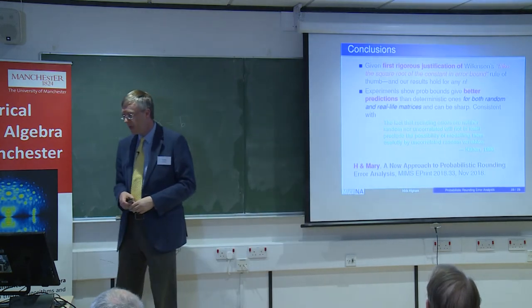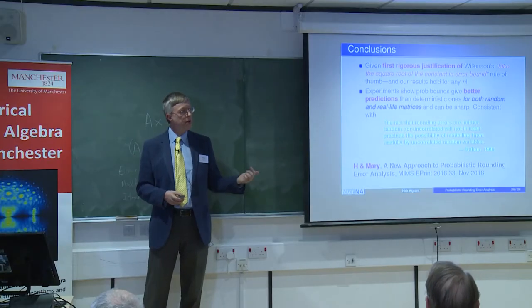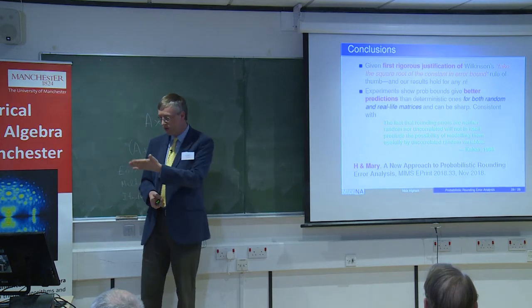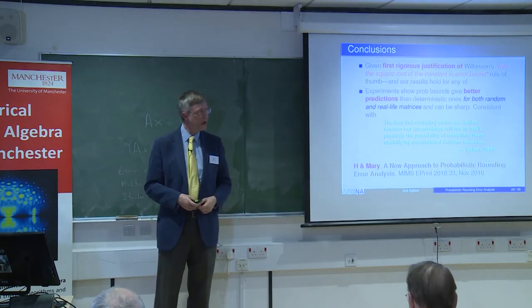I really haven't got time to go into this slide. I will just say we do have examples where the model fails. One example is when you have inner product of two large non-negative vectors. So we can certainly identify cases where the model is not valid and the probabilistic bound is actually less than the thing it's supposed to be bounding eventually. So to finish off, this is now a rigorous justification I think of Wilkinson's rule of thumb. The key idea was not to use the central limit theorem but to use a concentration inequality. The bottom line is that these probabilistic bounds are substantially smaller than the worst case. They're still a little way off the actual errors in many cases. This quote from Kahan is very appropriate. The fact that rounding errors are neither random nor uncorrelated will not in itself preclude the possibility of modelling them usefully by uncorrelated random variables. So that's answering the question that Holt and Swenson posed, and what we're doing agrees with Kahan's quote. Thanks very much.